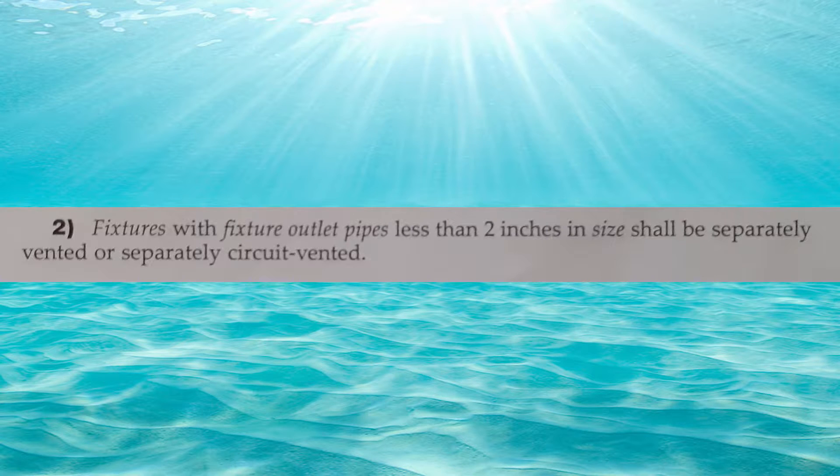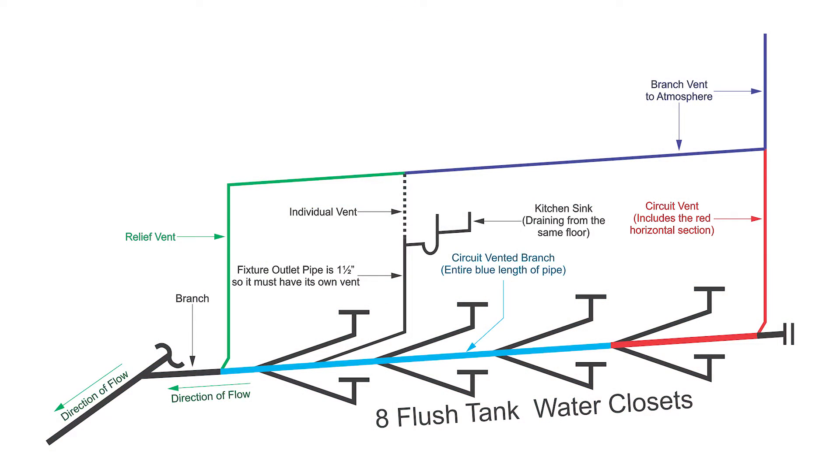Part 2. Fixtures with fixture outlet pipes less than 2 inches in size shall be separately vented or separately circuit vented. In this picture here we have a kitchen sink that's draining into the middle of our circuit vented branch and it has a fixture outlet pipe of one and a half inches, therefore it requires its own vent which will actually be that individual vent coming off.